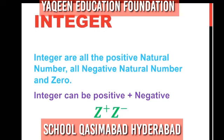Next are integers. What are integers? Integers are all positive natural numbers, all negative natural numbers, and zero.